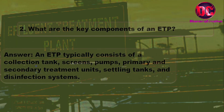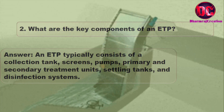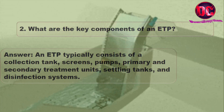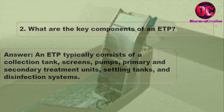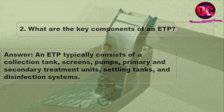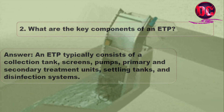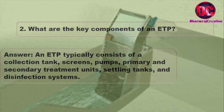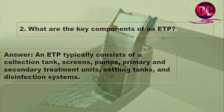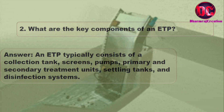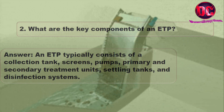2. What are the key components of an ETP? Answer: An ETP typically consists of a collection tank, screens, pumps, primary and secondary treatment units, settling tanks, and disinfection systems.